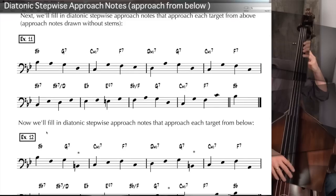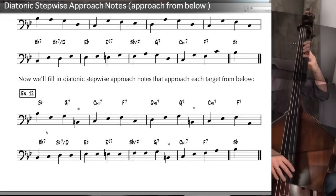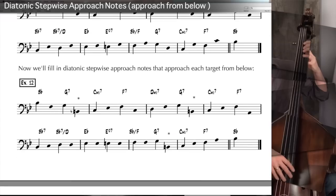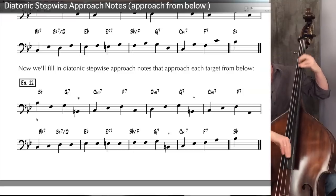Example 11 was all diatonic stepwise approach notes from above — everything fit into the chord or tonality. We're in B-flat, and the only note outside B-flat is the E-diminished, which is a passing chord between E-flat and B-flat over F. For example 12, we'll fill in diatonic stepwise approach notes that approach each target from below. One notable thing: because the second chord is G7 rather than G minor, the stepwise diatonic approach note from below would be a B-natural rather than B-flat — we'll see that three times in the progression. You'll hear it twice, once at groove tempo and once at medium-up.